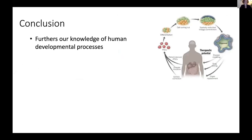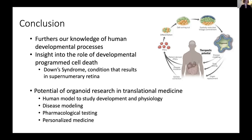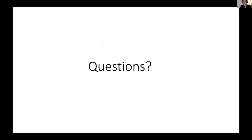This has important consequences for understanding not only basic developmental processes but also the basis of congenital retinal abnormalities that can lead to diseases of vision, for example Down syndrome, which results in a supernumerary retina and is an area of further research in my lab. Moreover, this knowledge has potential impact for translational research using retinal organoid models, including using organoids as a human model to study development and physiology, disease modeling, pharmacological testing, and personalized medicine. Thank you, and I can take questions now.